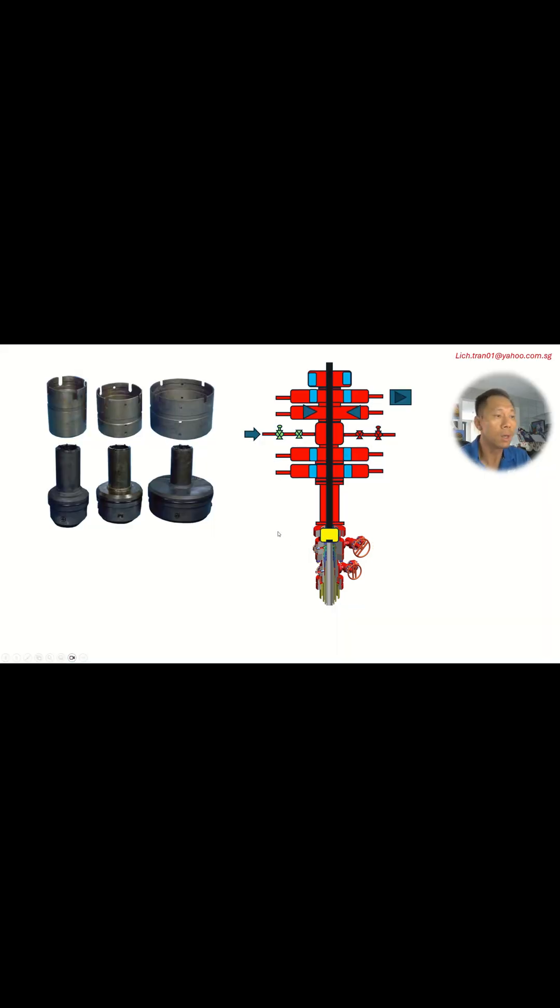Here we start first with the test plug. Here are a few important notes about test plugs. You can see in the diagram here we close the upper pipe ram, we apply the pressure via the kill line here, the pressure will be acting against the test plug.